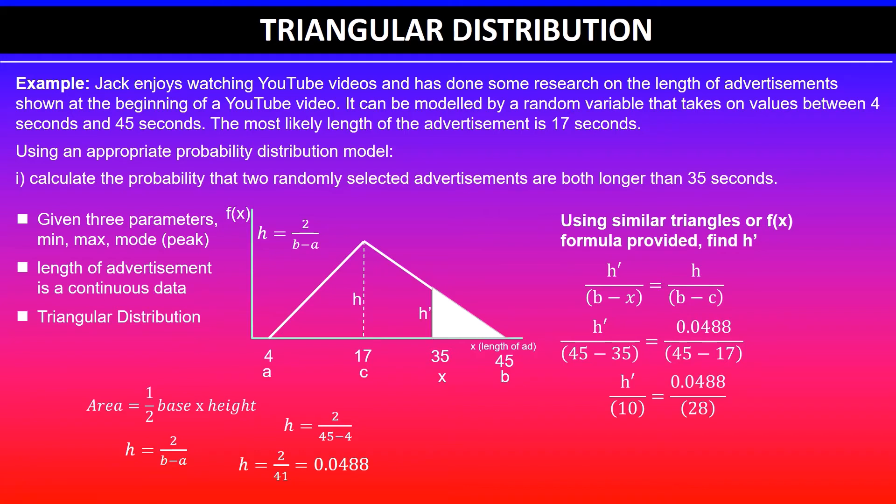We can quickly simplify this. h dash: 45 minus 35 of course is 10, and 45 take away 17 is 28. I will find h dash by multiplying 10 on both sides and that will leave you with 0.0174.